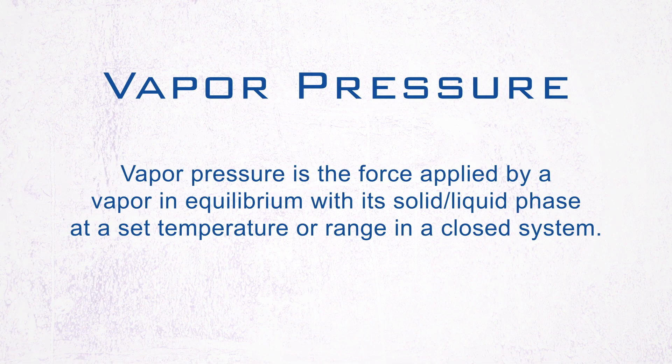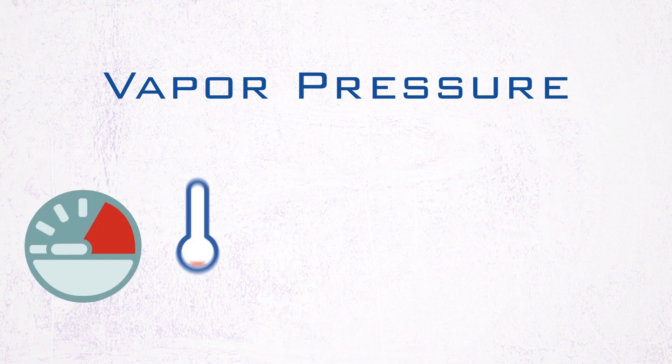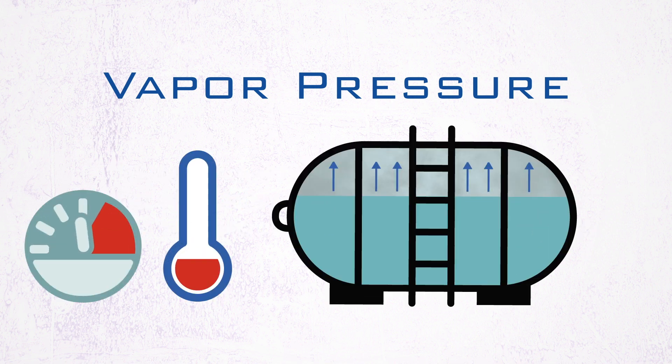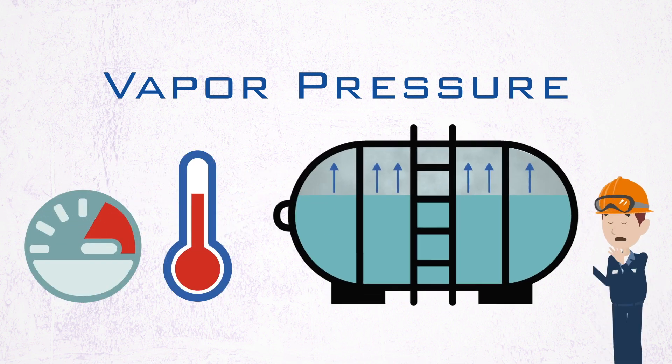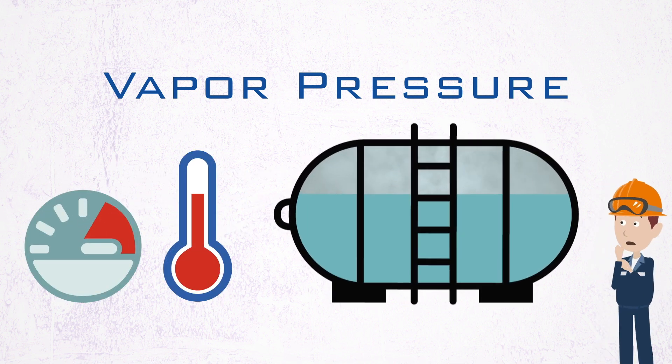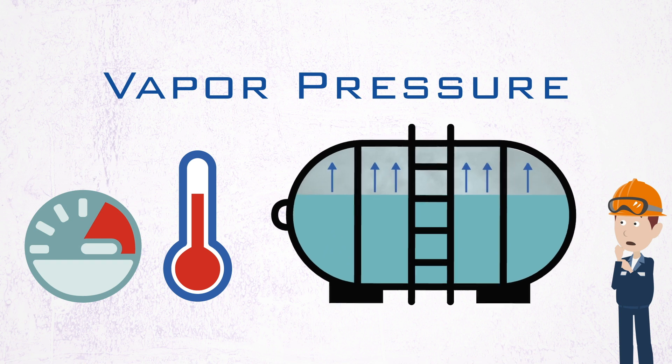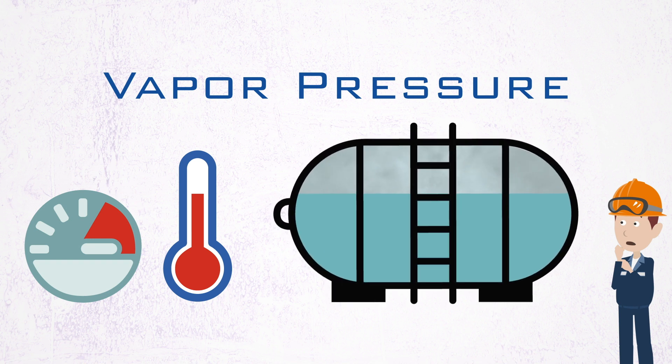Vapor pressure is the force applied by a vapor in equilibrium with its solid or liquid phase at a set temperature or range in a closed system. As temperature and vapor pressure increase, if the material is flammable, eventually there will be enough flammable vapors to create a potential fire hazard.